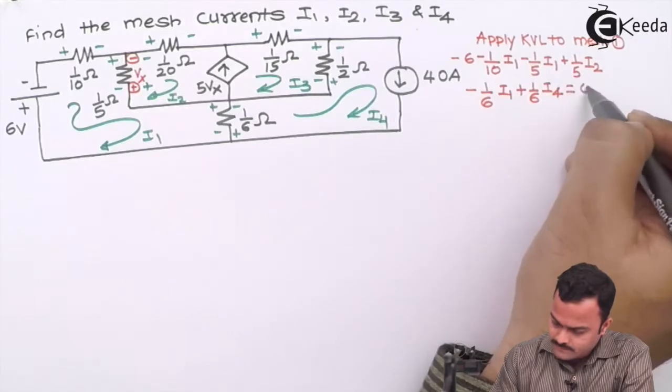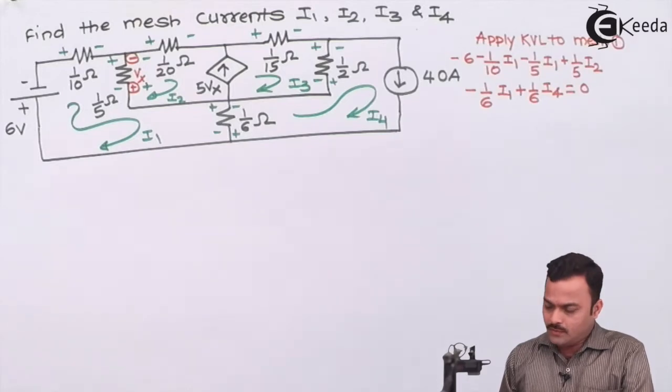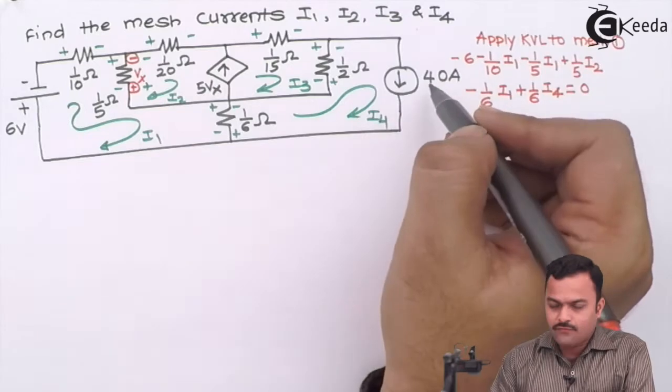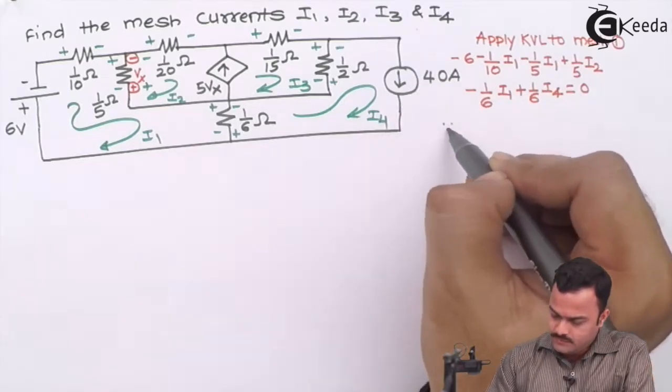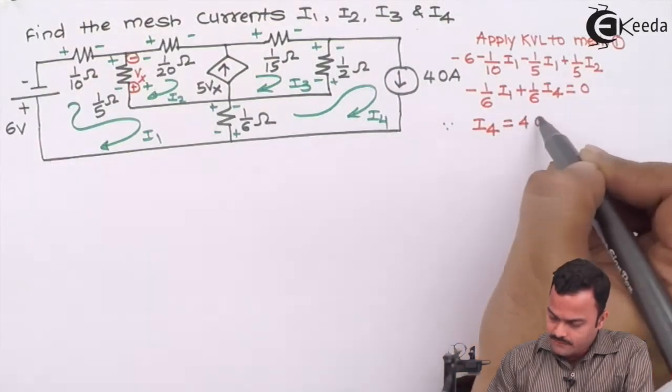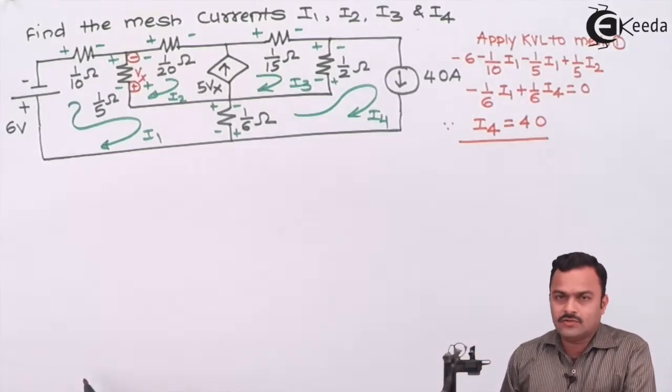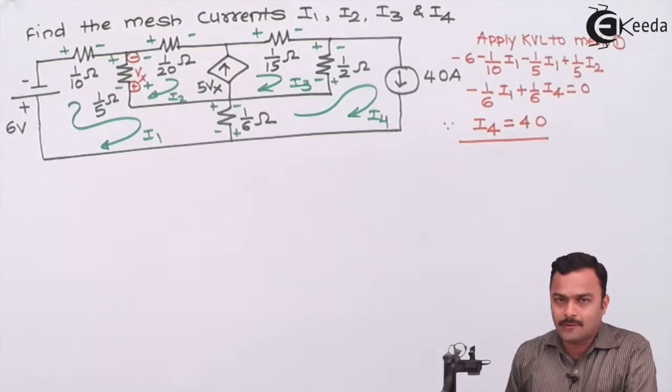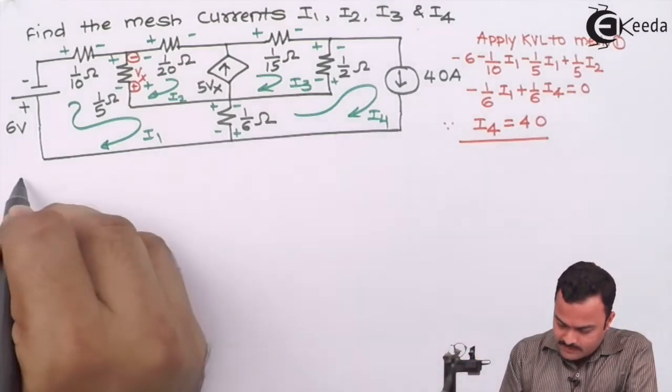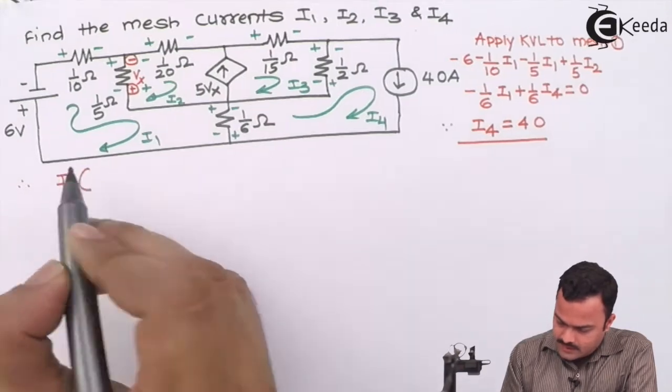This time we have to reduce the equations to three only. If you see carefully we can have this i4 as 40 ampere directly. We will have this i4 equal to 40 ampere as a variable and we will substitute it and reduce the number of equations to three only so that we can solve this using the calculator easily.